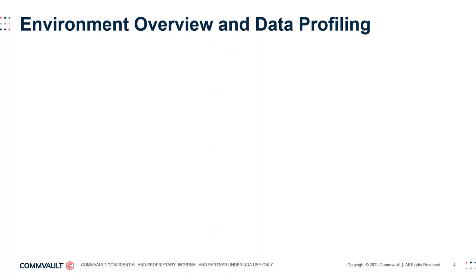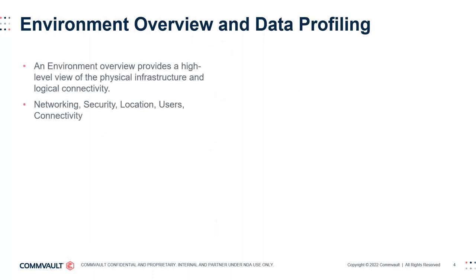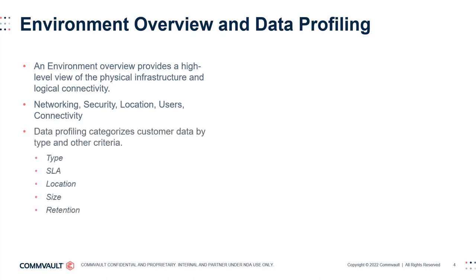An important initial phase of any Commvault design is to get an overview of the customer's environment and establish the various data profiles. An environment overview will primarily help you visualize the overall physical and logical infrastructure in order to establish the overarching design potential as well as the design constraints. You can even ask the customer if they have a Visio or PDF of their current infrastructure. Not only does sharing a diagram show a level of trust, but the icons they use might give you a view into who their primary vendors are. If they don't have a diagram, offer to help build one for the data protection architecture. A data profile categorizes a dataset that shares the same or very similar set of criteria.